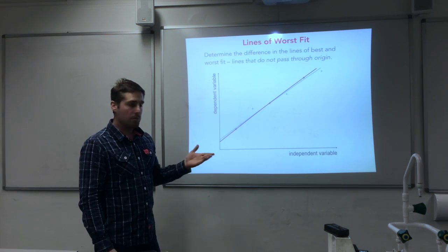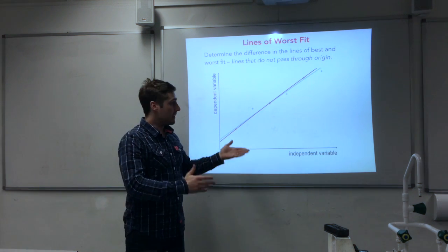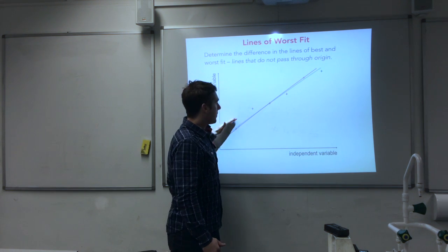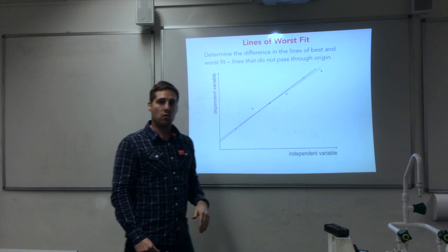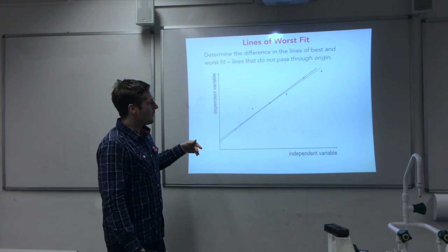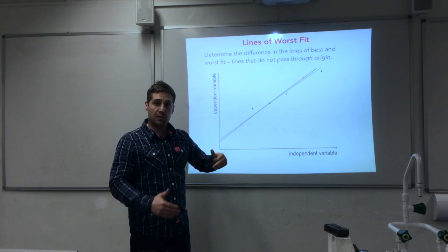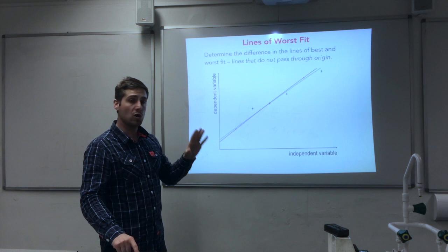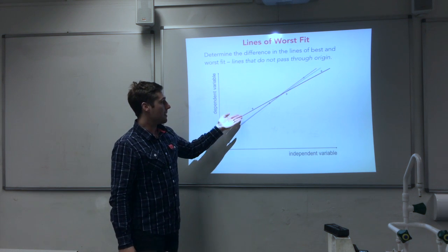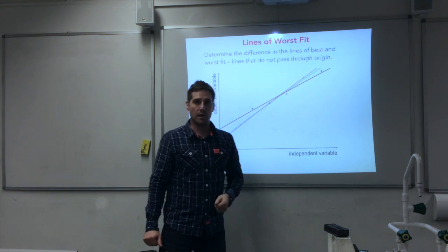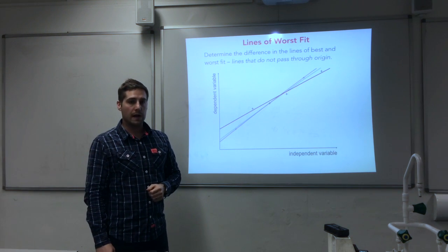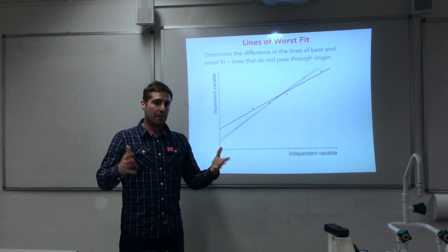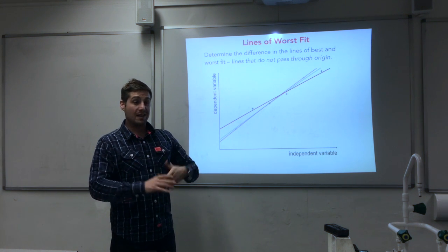Another possibility would be to look at these four plots here — they're lining up, with a sub-trend that's a bit more horizontal or less steep. So we could follow that, and this would give us more uncertainty in the graph because the gradient would be quite different, but not radically different. So I could follow that to give me this line of worst fit, and that would be equally valid. So those are some options for lines of worst fit.